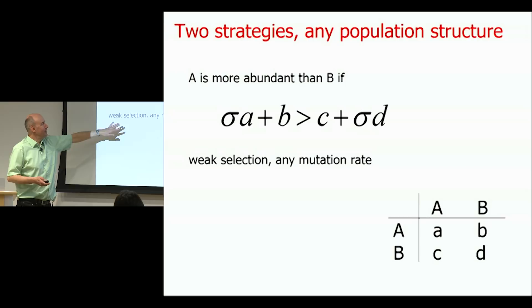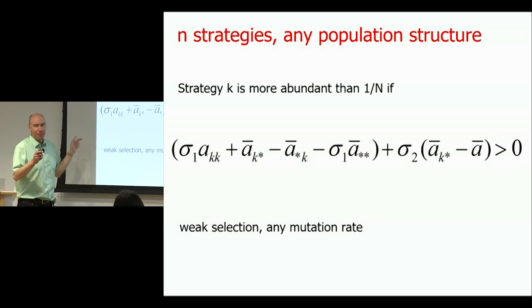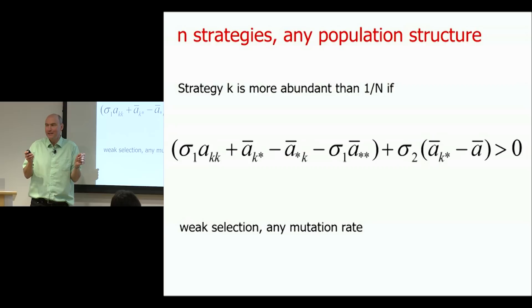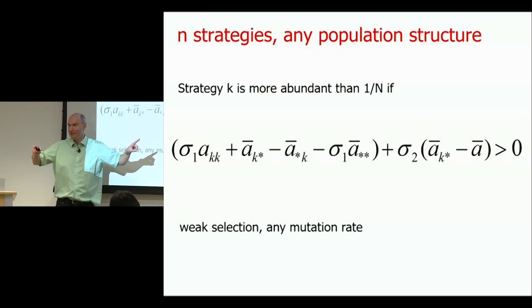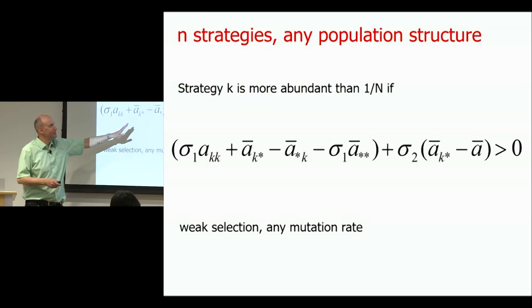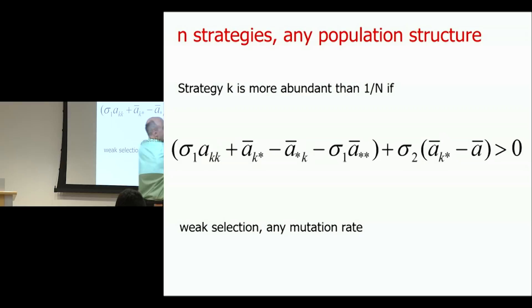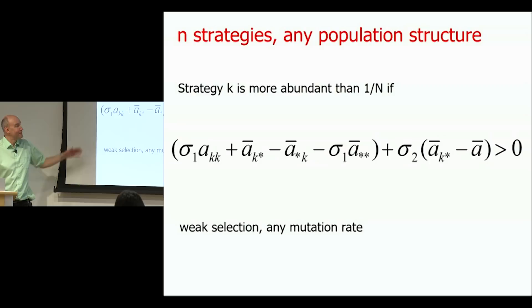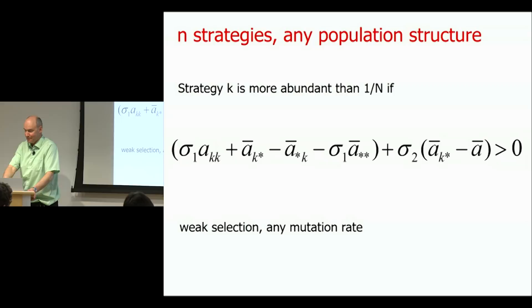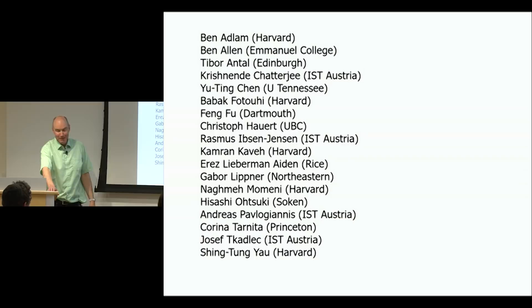A student asked about the N-strategy generalization for any population structure. With N strategies, there are still only two sigma values — not more — regardless of the number of strategies. This relates to Antal's result for well-mixed populations: in some sense, one sigma corresponds to the low-mutation term and the other to the high-mutation term, now extended to structured populations. We know the answer has this form, but there are very few examples where we can even calculate those sigma values. I had the privilege of working with many brilliant people over the years. Thank you very much.